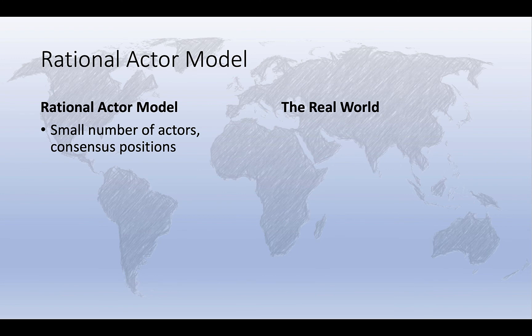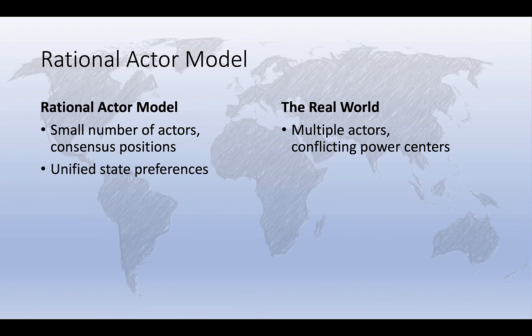In reality, there are often multiple conflicting power centers, each pursuing their own objectives. The rational actor model generally assumes that states' preferences are unified and clearly specified — that is, a single idea of the national interest exists, and decision makers operate in pursuit of that interest. In reality, states' preferences are often contested.